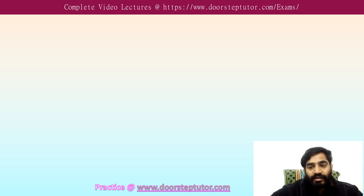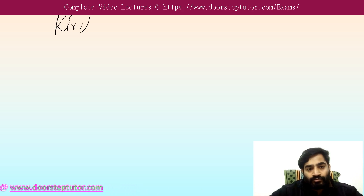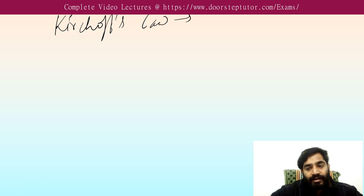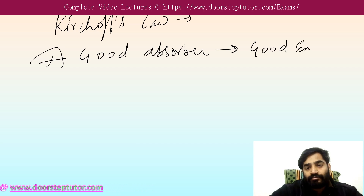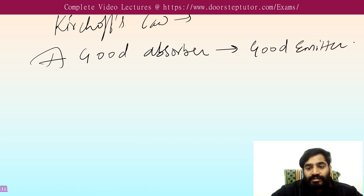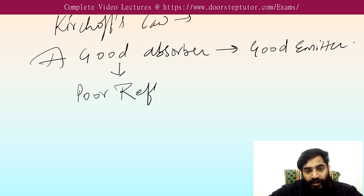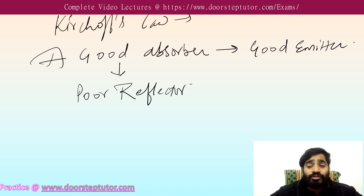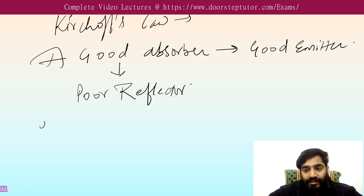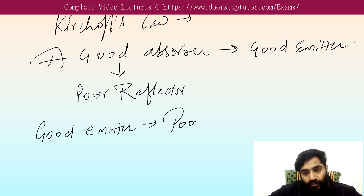The final conclusion of Kirchhoff's law is: a good absorber is a good emitter. Since a good absorber is a poor reflector, the ability of a body to emit radiation is related to the opposite of its ability to reflect. So a good emitter is also a poor reflector.